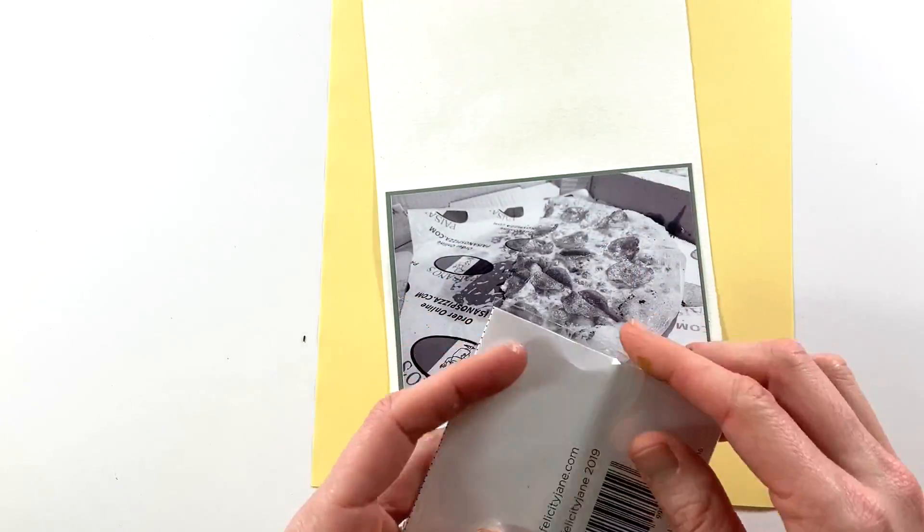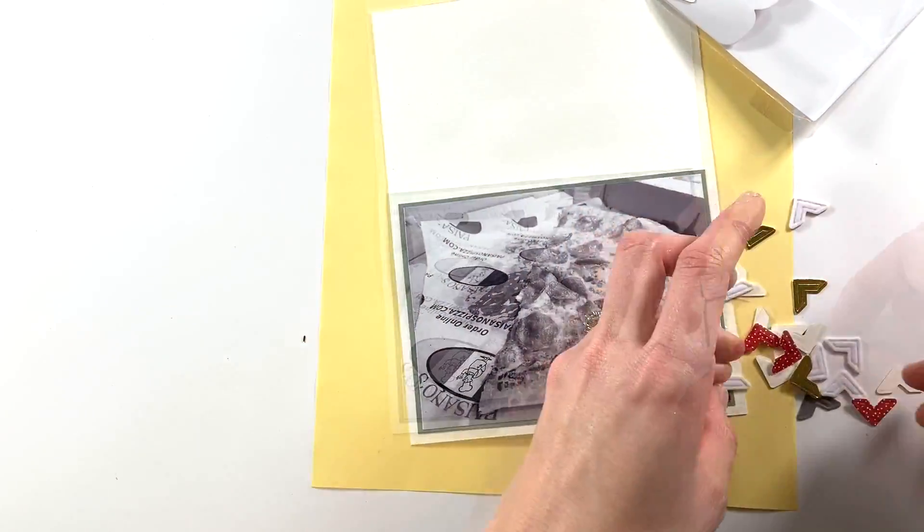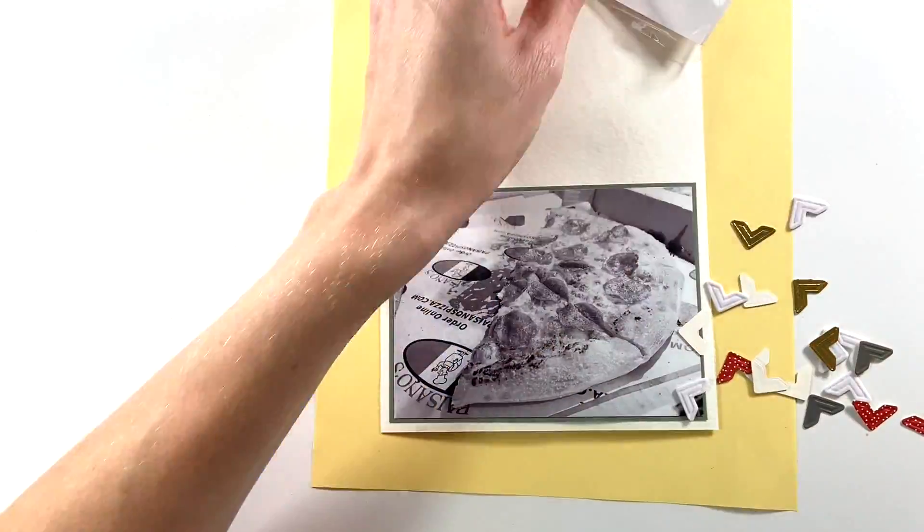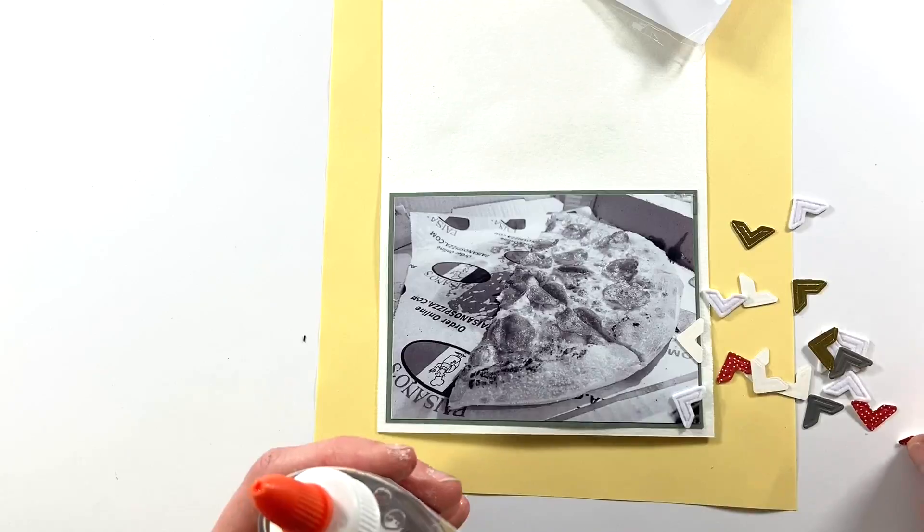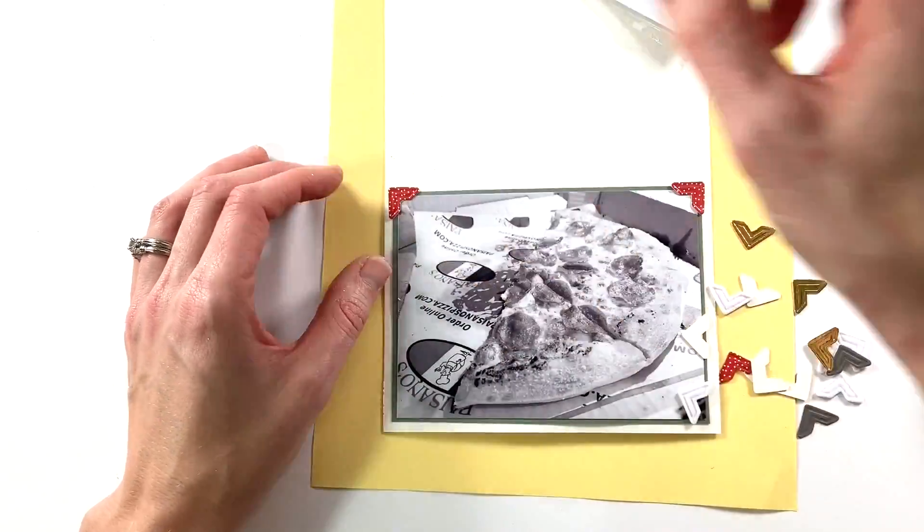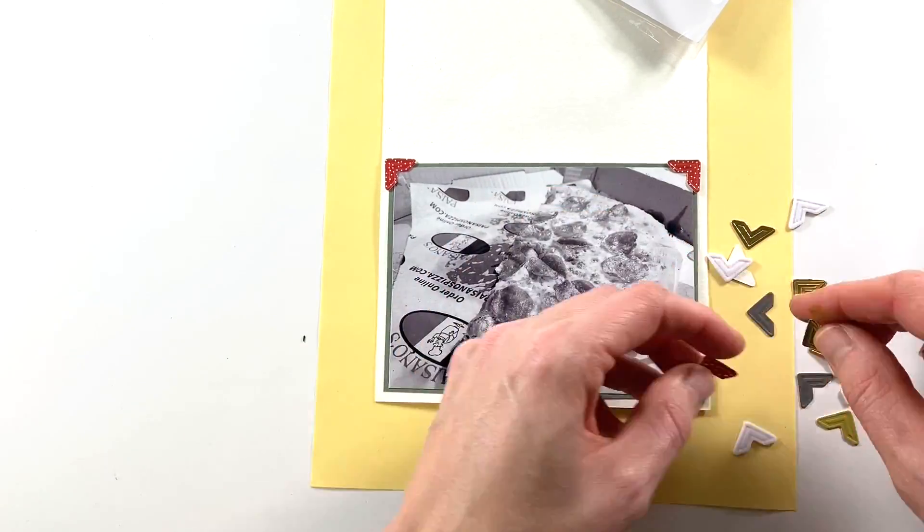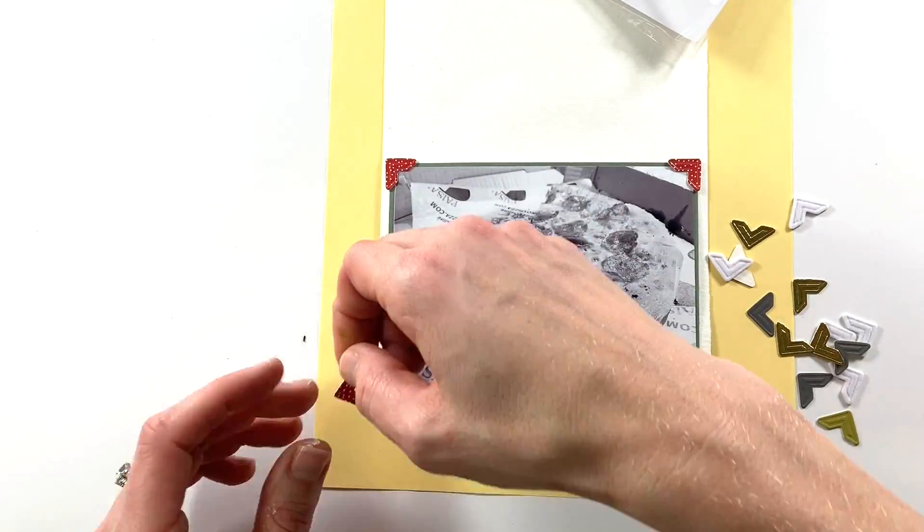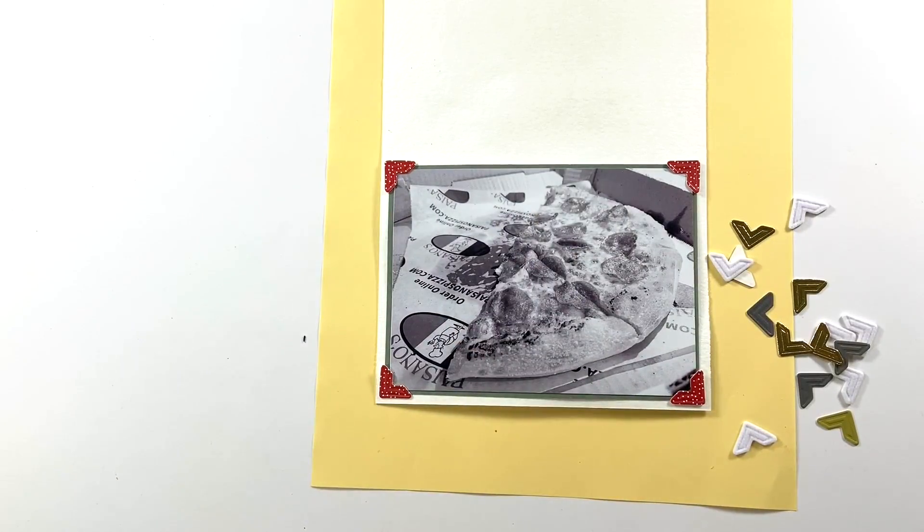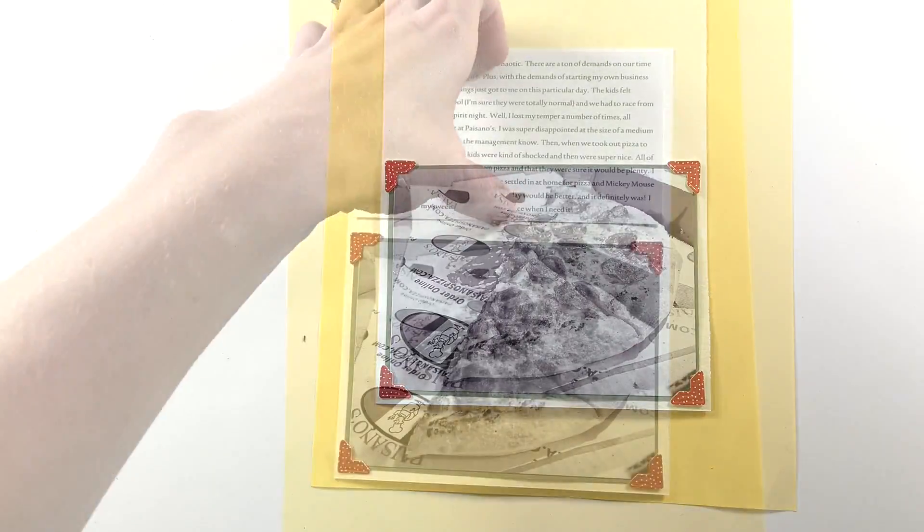So that is down and then I'm going to grab these Felicity Jane photo corners that came as part of the Noel kit. I'll add just a little bit of glue to each corner and I'm going to add red photo corners just to bring in a little bit more of that Christmas feel and just add a little bit of detail to the back. Again I don't want it to be very busy because the front is so busy and I have a lot of space up top where I'm going to be putting my story of what happened that day.